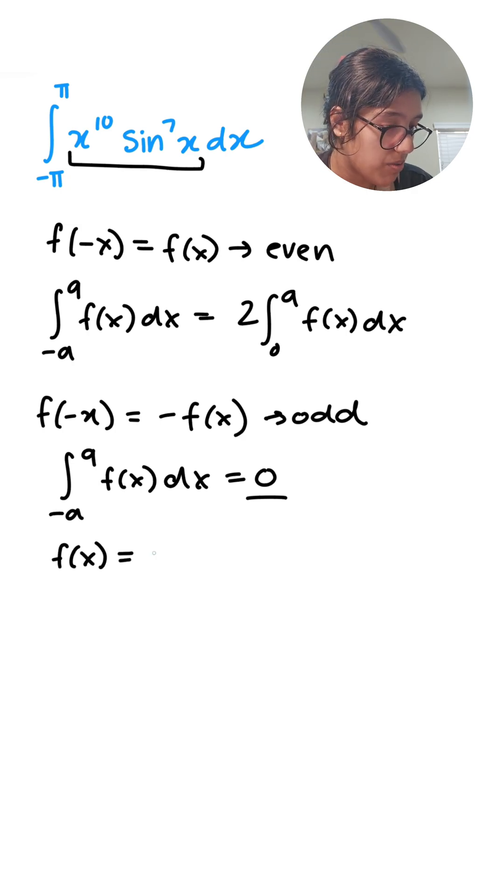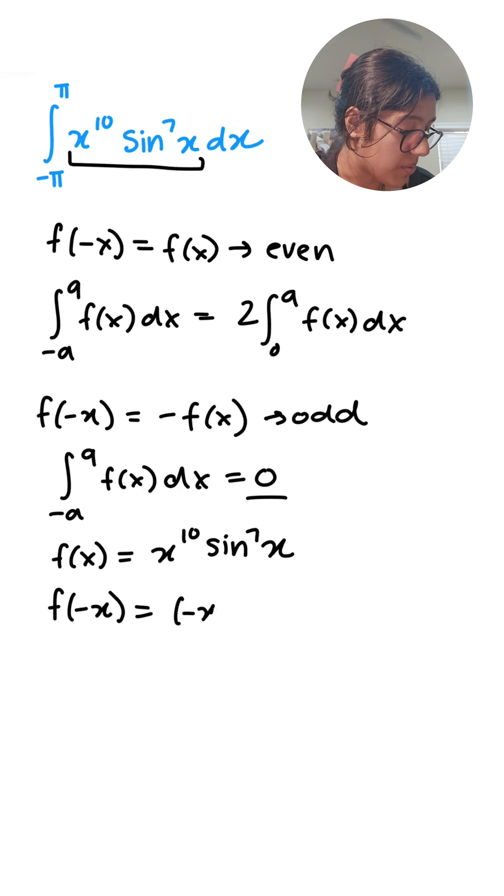So now let's say f of x is equal to what we just said before, but we also know that we have to find f of negative x and see what that is equal to. So if we do that, we get negative x to the power of 10 times sine of negative x, and then the whole thing is to the power of 7.